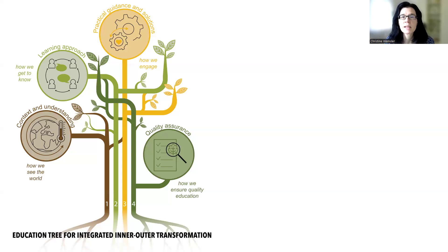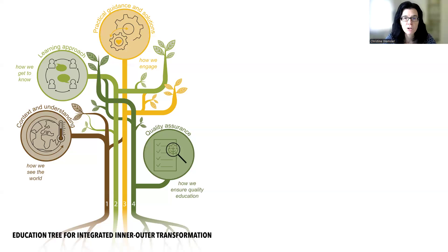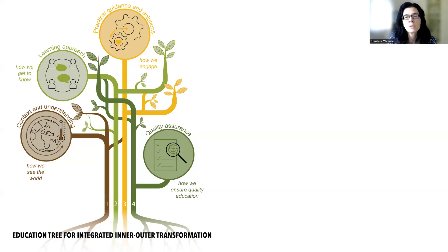We decided to use the tree to illustrate these four essentials because it is a metaphor for growth and connection. If we apply the four key ingredients, we can grow tall, thicken our trunk and spread our roots wide and deep. The tree is also a metaphor for integrated inner-outer transformation because it has roots that normally grow below the surface and cannot be seen.